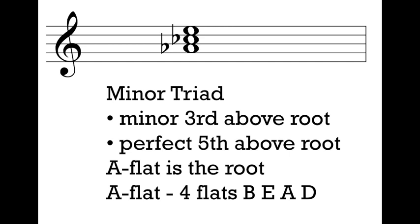Now I want a perfect fifth above Ab. The perfect fifth is the fifth that is in the Ab major scale. I look at my key signature and ask: what kind of E is in Ab major? The key signature tells me I need an E flat for a perfect fifth. E natural is a half-step bigger — Ab to E natural is an augmented fifth. So I use E flat instead. This is my Ab minor triad: it has a minor third above the root and a perfect fifth above the root.